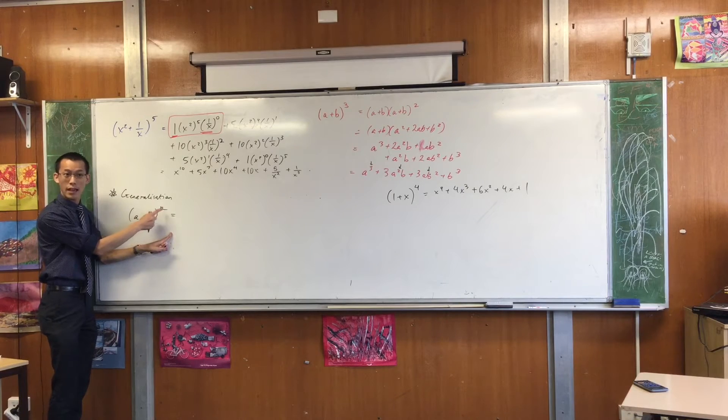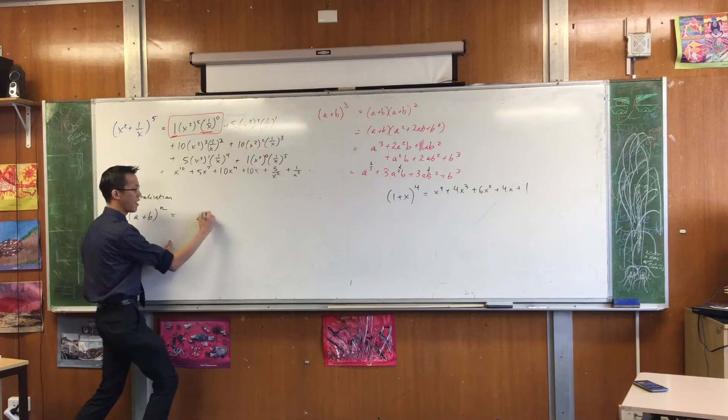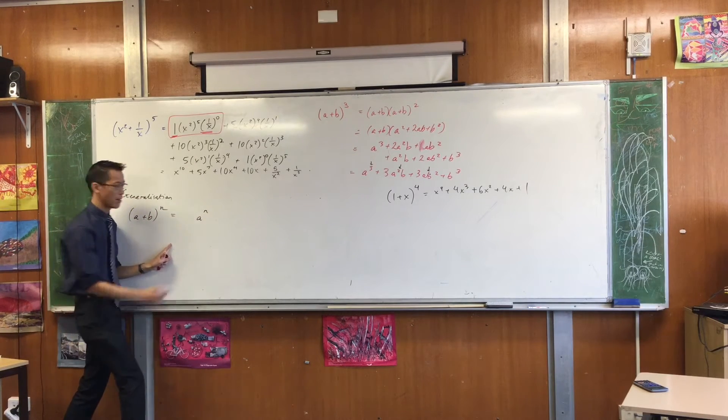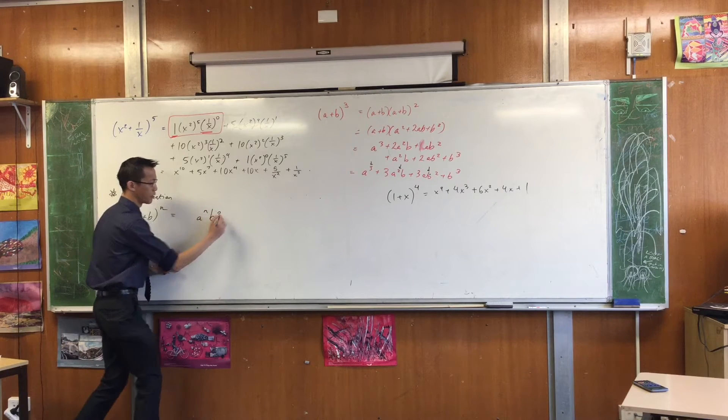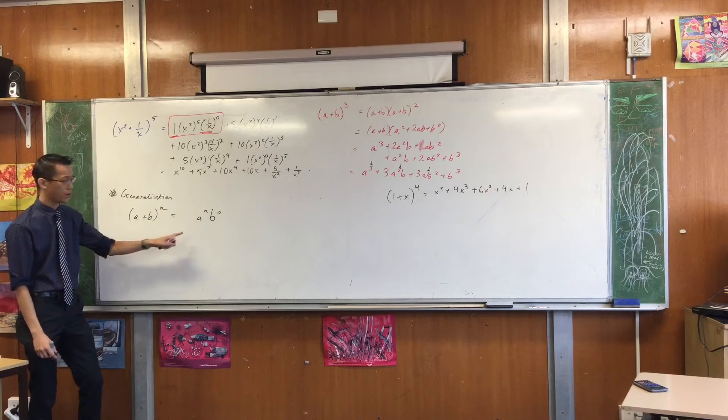In this case, it won't be five, it'll be n. So I'm going to have n of those and I'm going to have none of those. That's two of the three components.